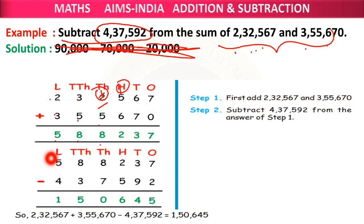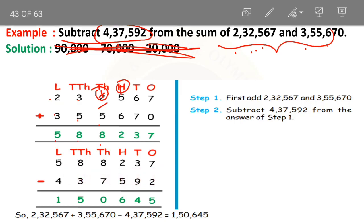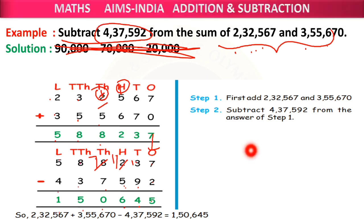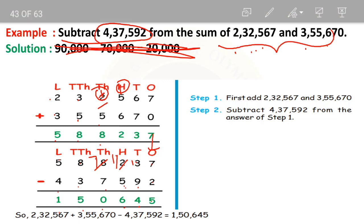So 5 lakhs 88,237 is our sum. From this sum we will subtract 4 lakhs 37,592. Starting from the ones place: 7 minus 2 is 5; 3 minus 9 is not possible, borrow — 13 minus 9 is 4; 1 minus 5 not possible, borrow — 11 minus 5 is 6; 7 minus 7 is 0; 8 minus 3 is 5; 5 minus 4 is 1. The answer is 1 lakh 50,645.